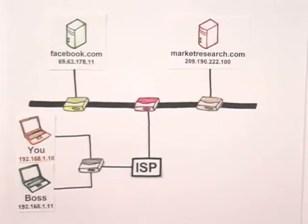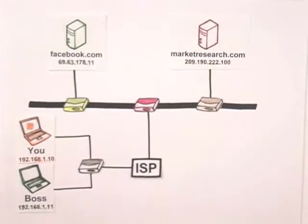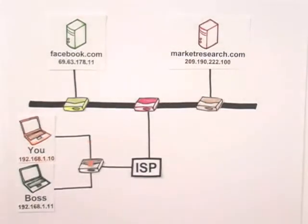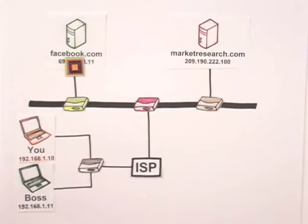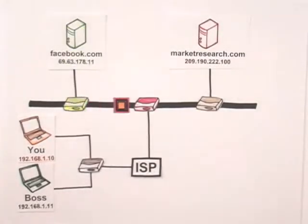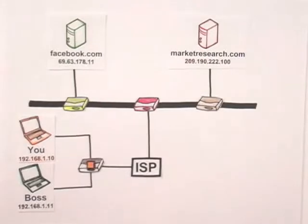Imagine each packet added as a piece of candy, wrapped in several layers. The first layer is your computer's IP address. Your computer sends the packet to the first router, which adds its own IP address. Each time the packet reaches a new router, another layer is added until it reaches the server. Then when the server sends back information, it creates packets with an identical wrapping. As the packet makes its way over the Internet back to your computer, each router unwraps a layer to discover where to send the packet next, until it reaches your computer and not your boss's.